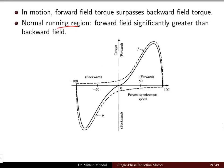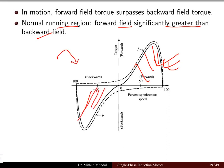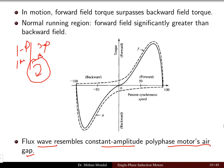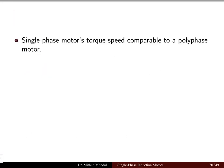Under normal running conditions, the forward field is significantly greater than the backward field. The flux wave resembles a constant-amplitude polyphase motor. When the rotor is in rotation, the single-phase induction motor and the three-phase induction motor behave in a similar fashion, producing constant torque and constant flux. The single-phase motor torque-speed characteristic is comparable to a polyphase motor.